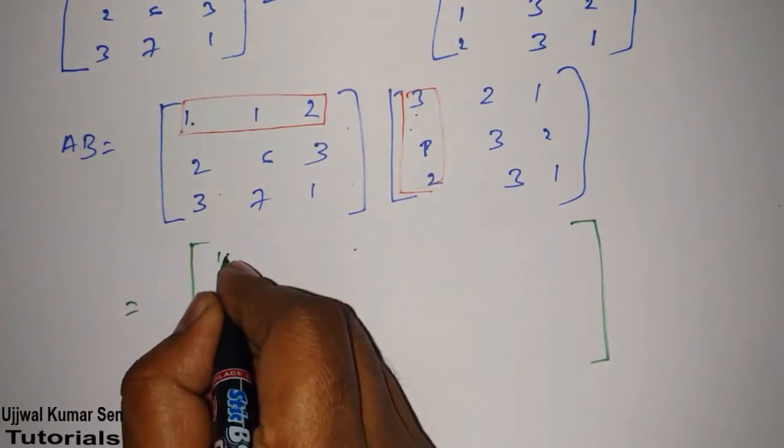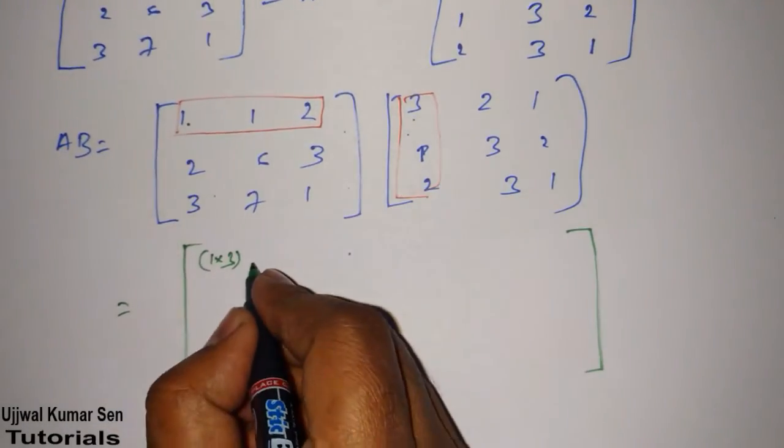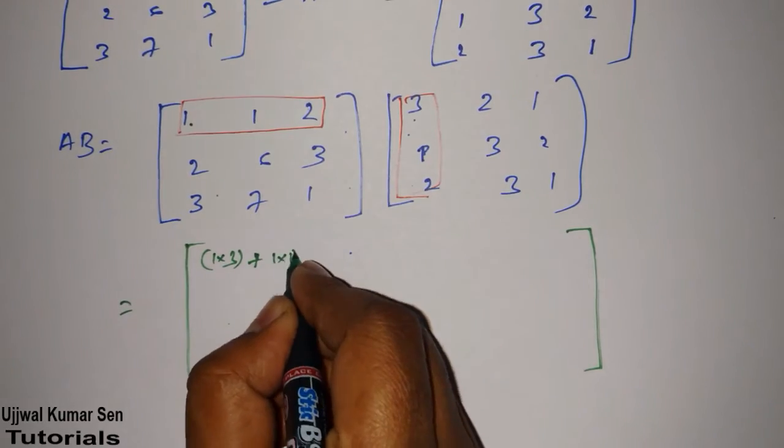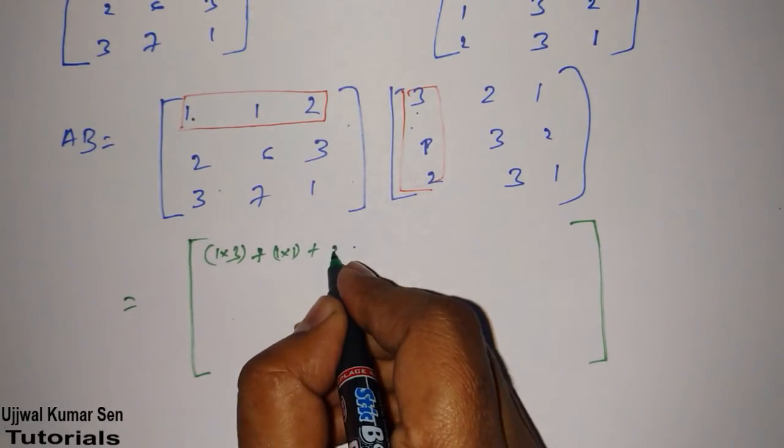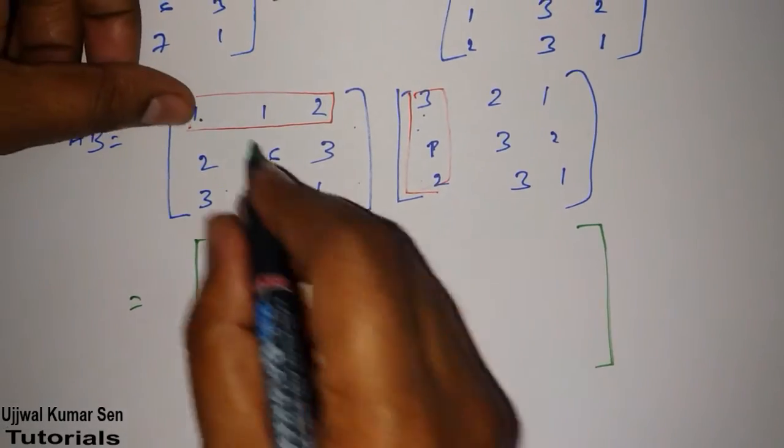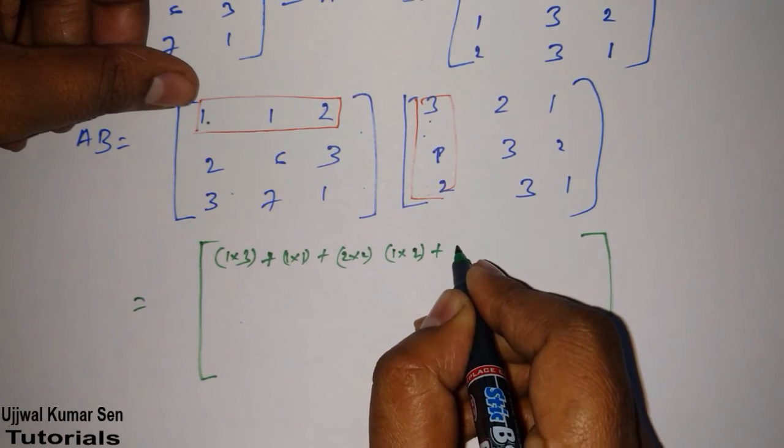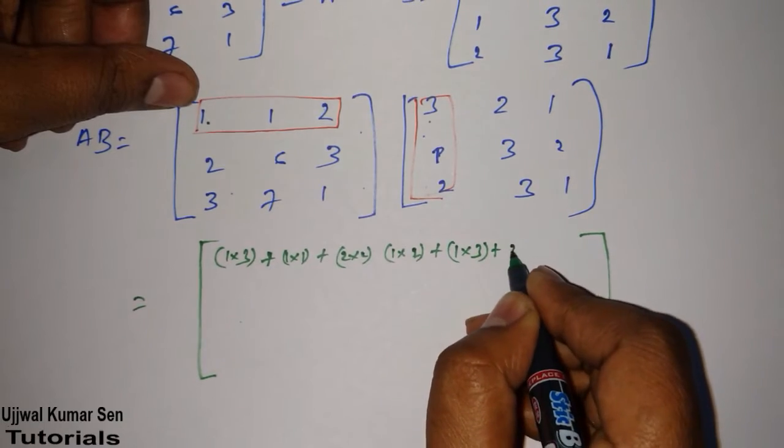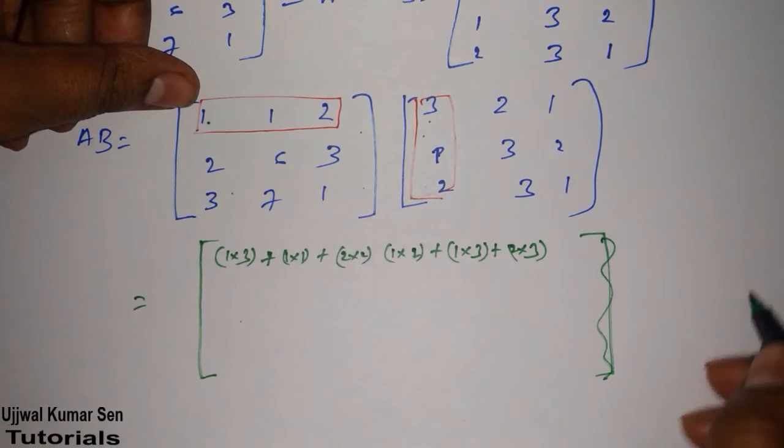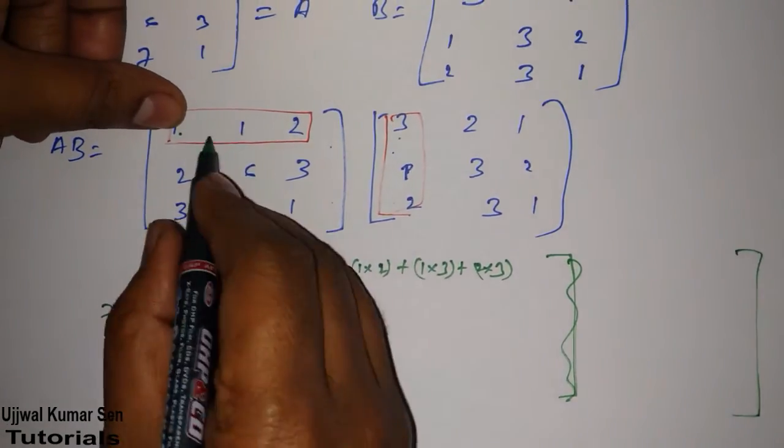Now, this one and this one. 1 multiple 3, then 1 multiple plus 1 multiple 1 plus 2 multiple 2. And then let's move to the next one. What we got here? 1 multiple 2, then plus 1 multiple 3, then plus 2 multiple 3.